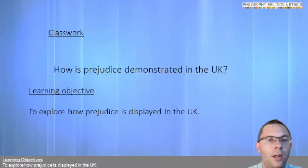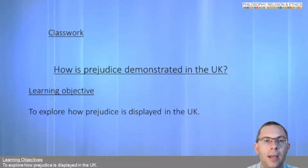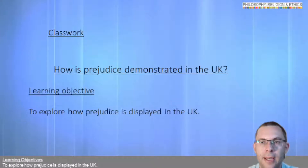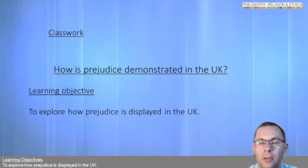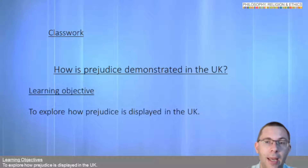Our title today is: How is prejudice demonstrated in the UK? Make sure you get that down. As always, do pause me and please send your work through to your teachers by the end of this lesson. Our objective is really straightforward — it's to explore how prejudice is displayed in the UK.